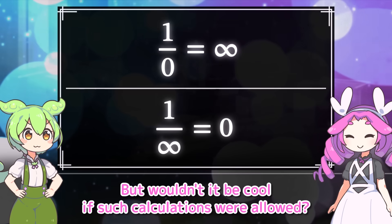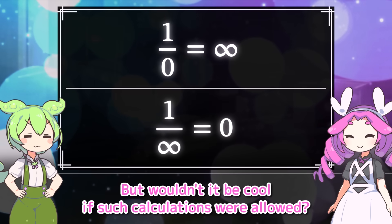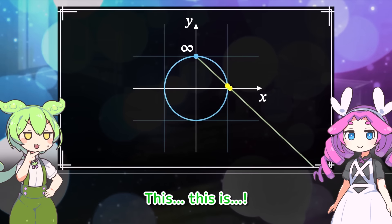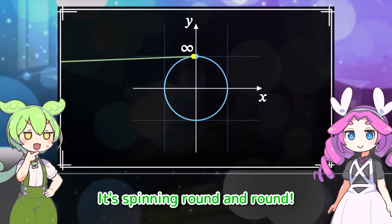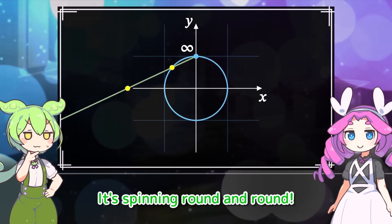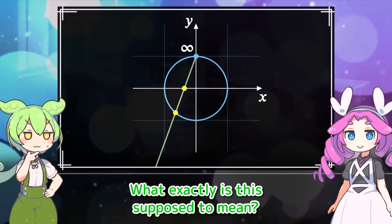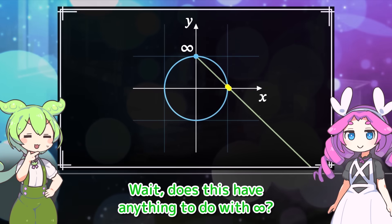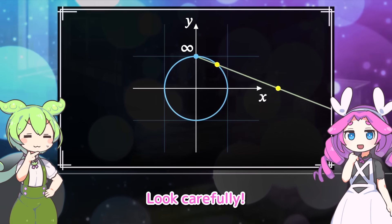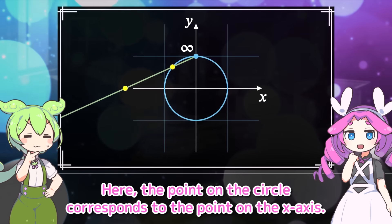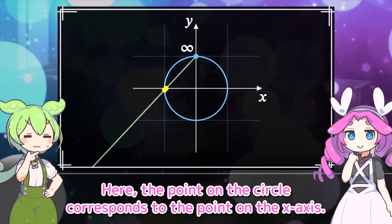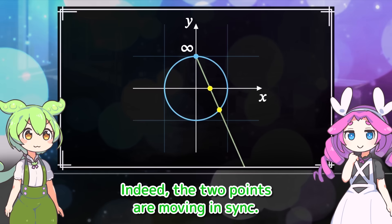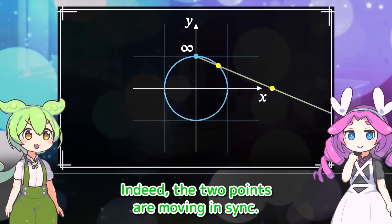But wouldn't it be cool if such calculations were allowed? Let's move on. This is spinning round and round. What exactly is this supposed to mean? Does this have anything to do with infinity? Look carefully — the point on the circle corresponds to the point on the x-axis. Indeed, the two points are moving in sync.